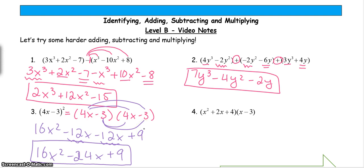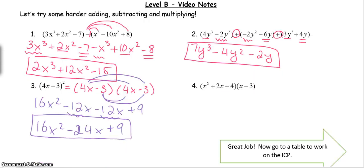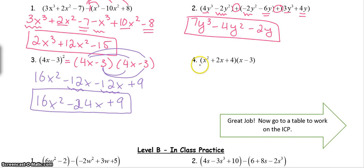All right, now onto our last example. We have a parentheses with three terms, so a trinomial, times a parentheses with two terms, which is a binomial. Whenever I've got more than two terms in one of my parentheses, I like to create a box to help me with my multiplication.